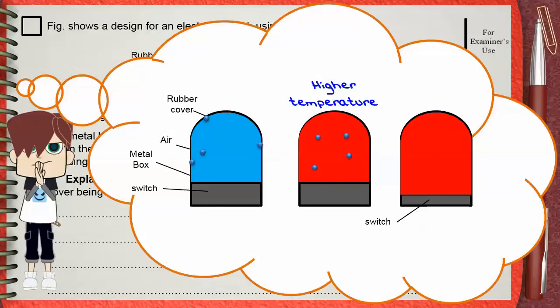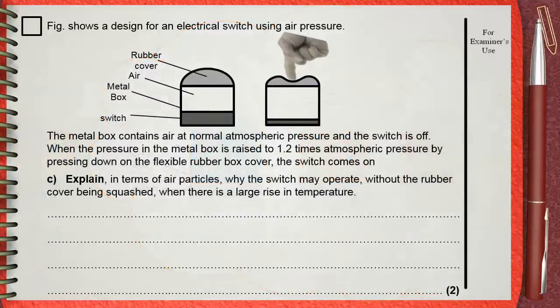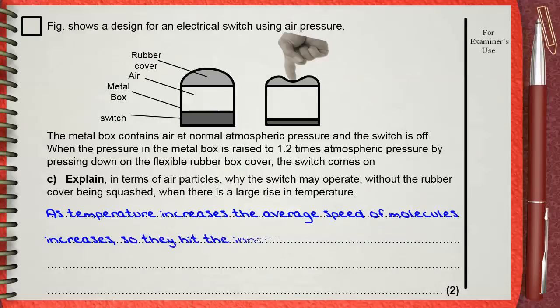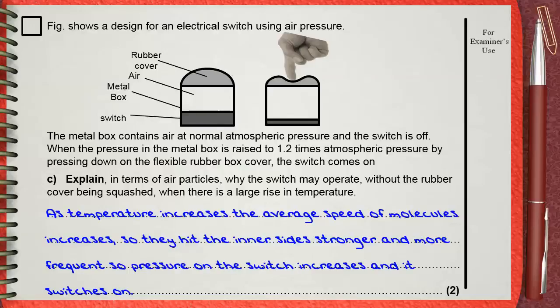This can be explained in an answer as: As temperature increases, the average speed of the molecules increases, so they hit the inner sides stronger and more frequently. So pressure on the switch increases and it switches on. Two marks for this answer.